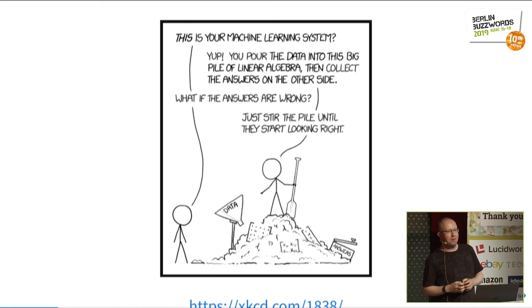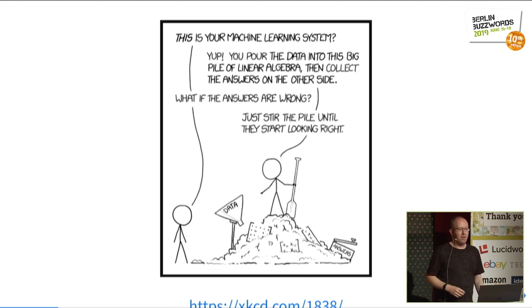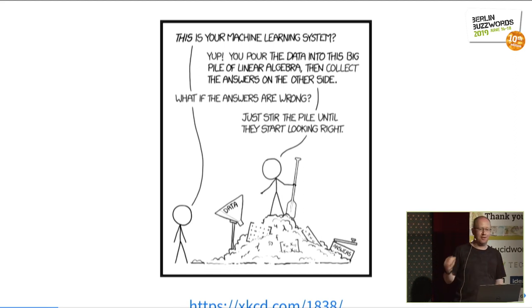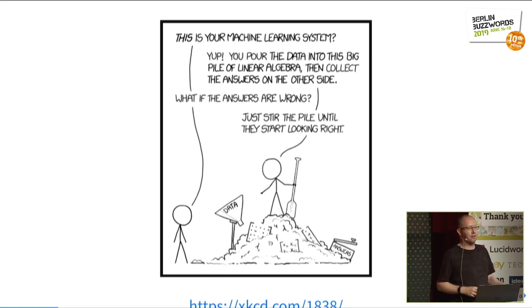Machine learning — there's an XKCD comic that everyone's seen. Be aware that some of it is just cheating with your hyperparameters until the right answer comes out. You can do amazing things with AI and ML, and you can also do terrible, terrible things. Just try to have some quality metrics that give you an idea of what's going on.